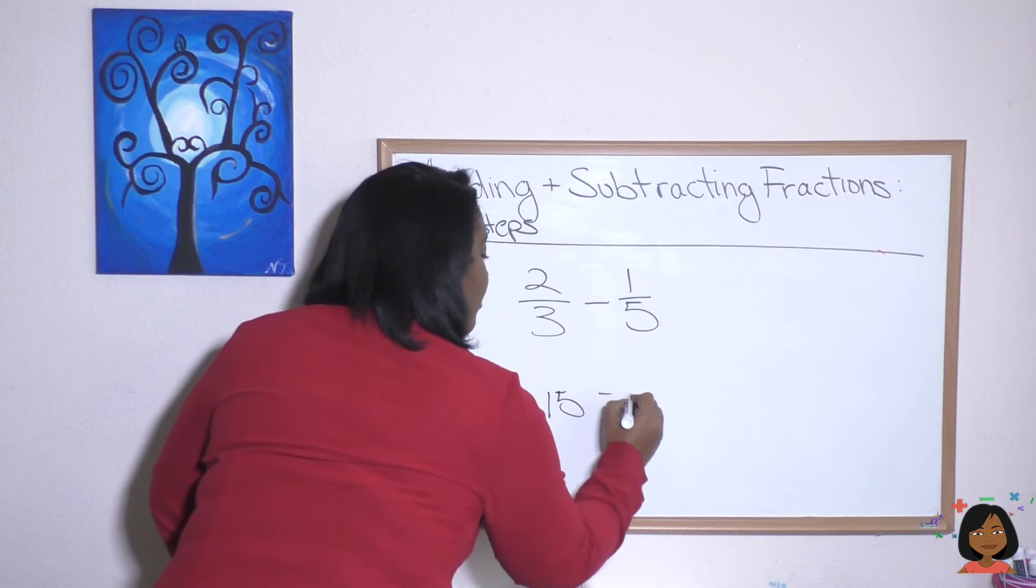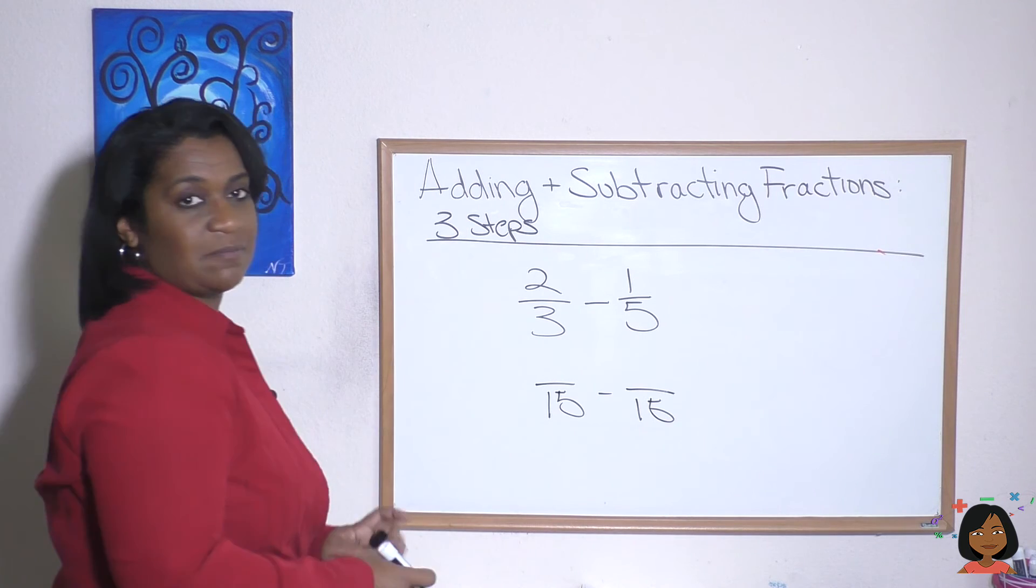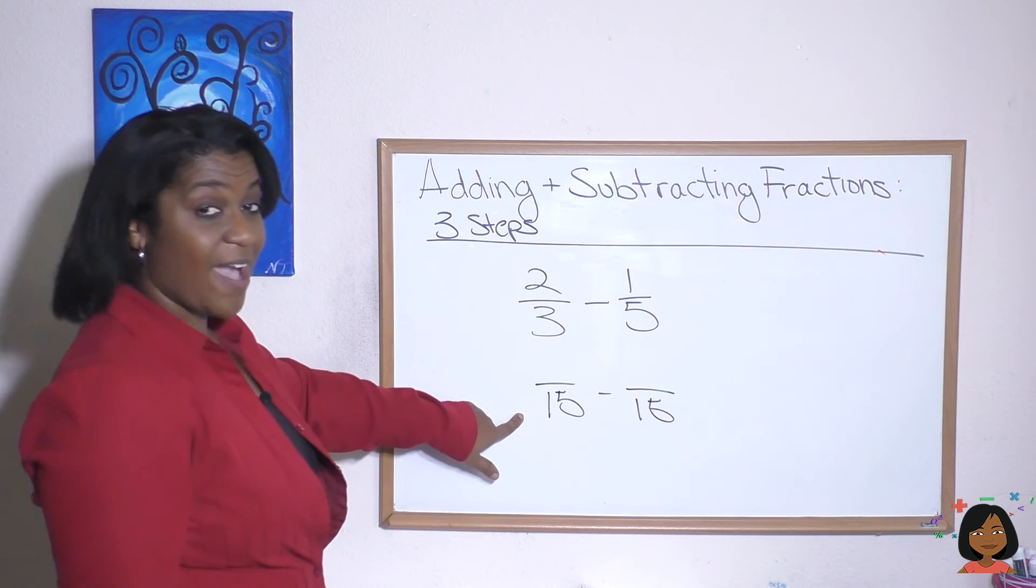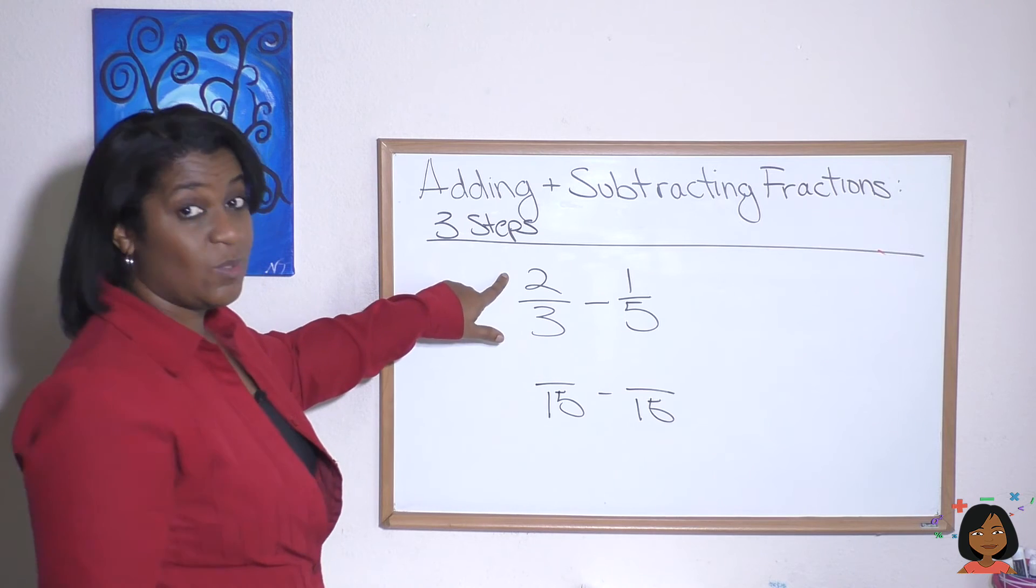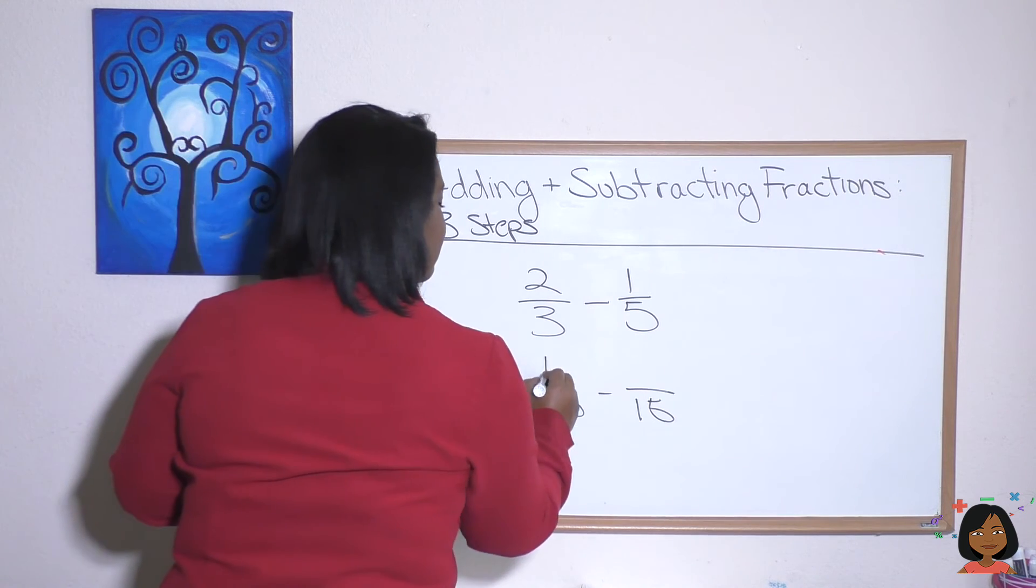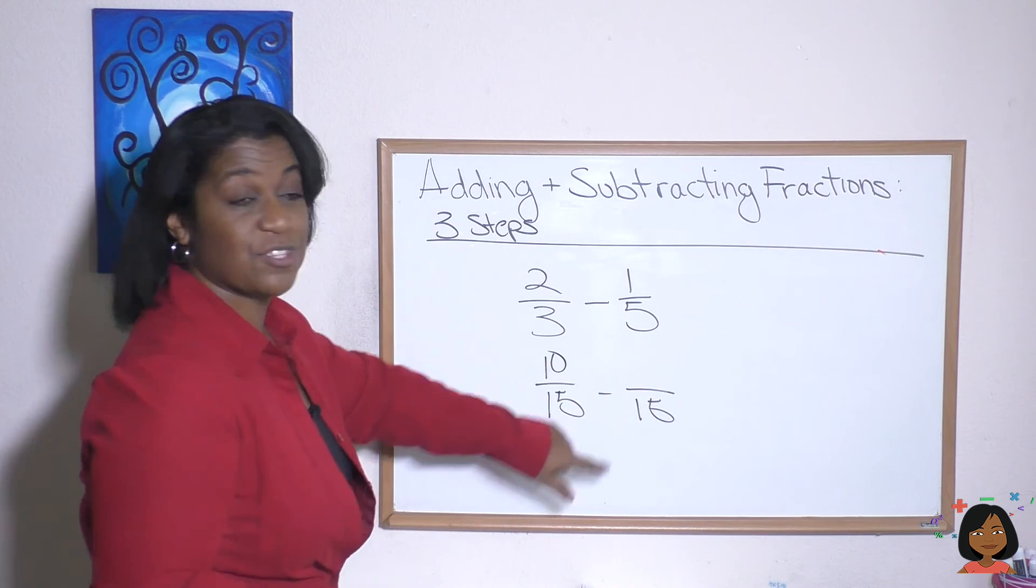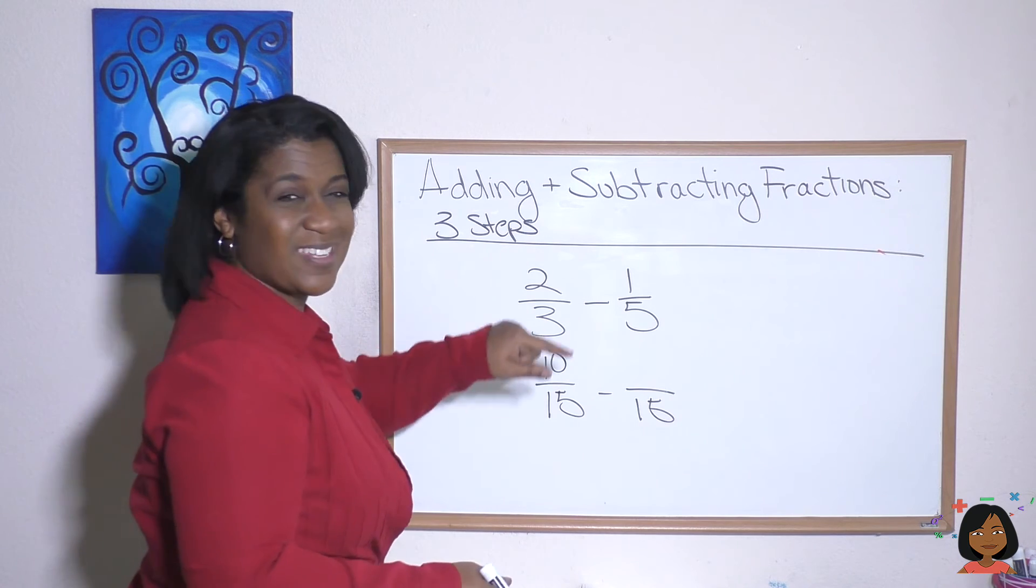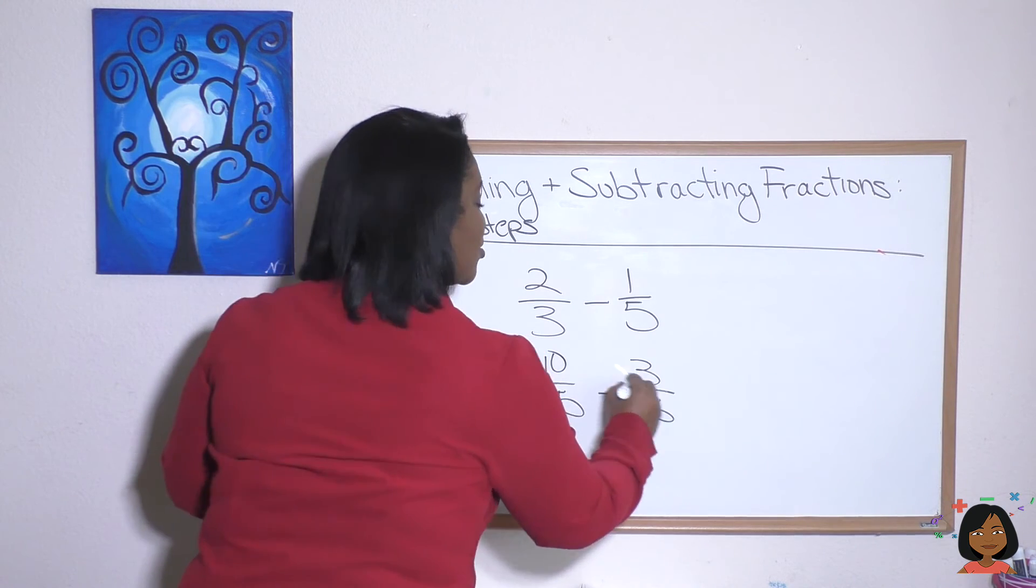So both of them are going to say something over 15. Three times five is 15. So two times five is 10. Five times three is 15. So one times three is three. That's our shape.